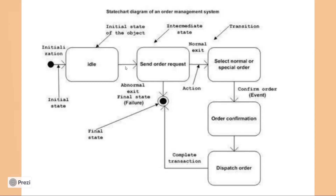It is very necessary that you clearly label the arrows: this arrow is an abnormal exit, this arrow is a complete transaction, this arrow represents the action, and this arrow is a normal exit.